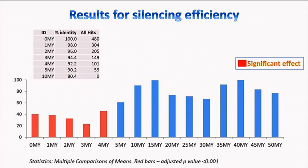We made these constructs and tested them in our system. Here you can see all the constructs — 100% means the construct has no effect, representing the control. As the bars go down, they have more effect, with zero being the best. Red bars indicate significant results; we typically do about five experiments, then run statistics to see what stays significant. Interestingly, up to four million years — 92% identity — you still have an effect. But starting from 90% identity, you have no effect anymore.